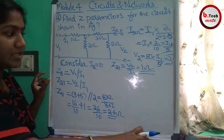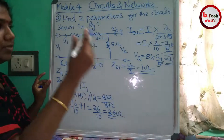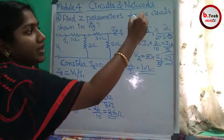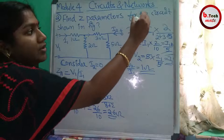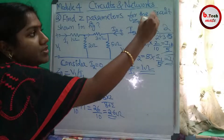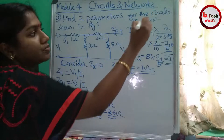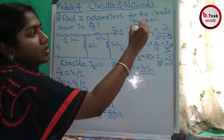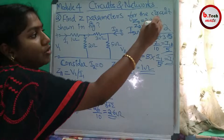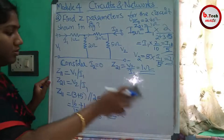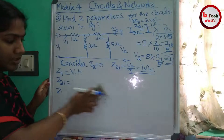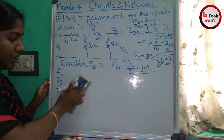Summarizing the first condition results: Z11 equals 2.6 ohm, and Z21 equals 1 ohm. Now we move to the next condition.